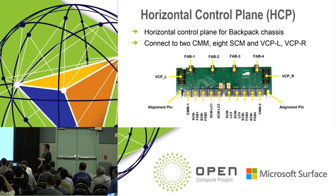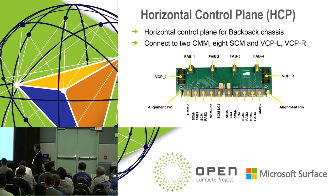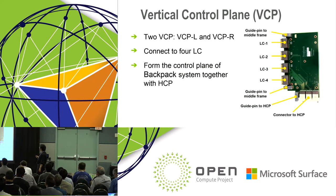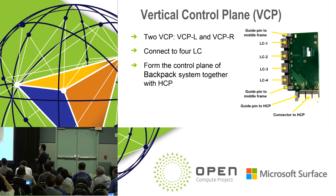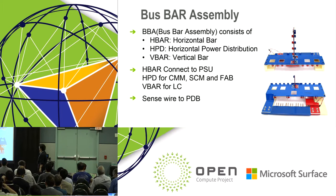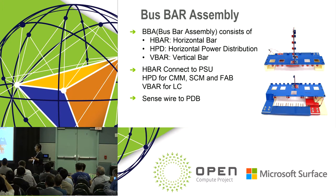HCP — horizontal control plane: this is one of the passive backplanes inside the chassis, the full control plane. On the bottom side there are 10 connectors: two CMMs plus eight SCMs plug into this control backplane. On the rear side, the four connectors connect to the fabric cards. VCP — vertical control plane: the VCP is embedded in the HCP and provides the control interface to the four line cards. Each line card has two switch elements, which is why there are left and right VCPs. Bus bar: the bus bar has three pieces. The H bar is horizontal and connects to the four PSUs for load sharing. The V bar (vertical) provides power to the four line cards. The HPD in the middle provides power for the fabric cards, SCM, and CMM.